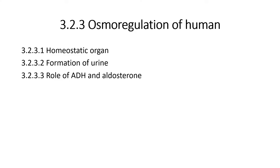The next part covers osmoregulation in humans. We will go into detail on the kidney as an excretory organ and how the kidney regulates the formation of urine. The last part covers the role of ADH and aldosterone.